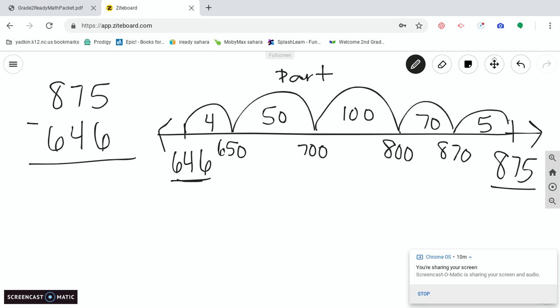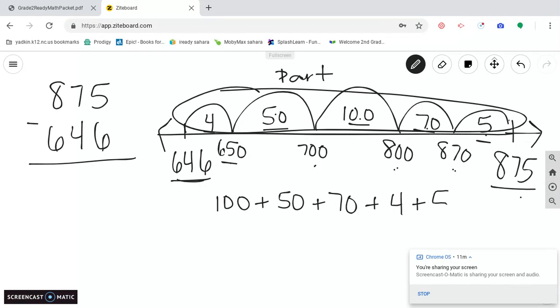Let's go back and check our work. I did 646 plus 4 is 650. 650 plus 50 is 700. 700 plus 100 is 800. 800 plus 70 is 870. 870 plus 5 is 875. So my answer should be here. I've got 100, 100. Then let's look at those tens: 50 and 70. And then I've got ones: 4 and 5. It's much easier if you put together your tens and ones. So 50 plus 70, that 50 and 50 makes another 100. So I actually have 200 plus 20 plus 9. My answer is 229.